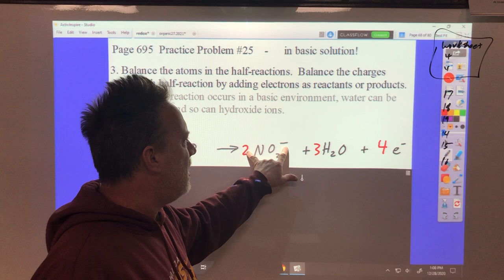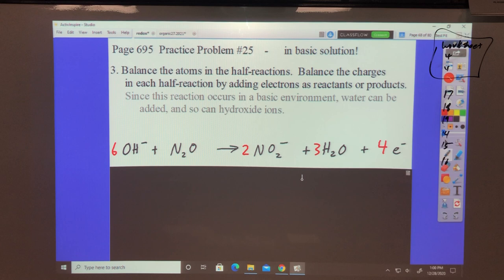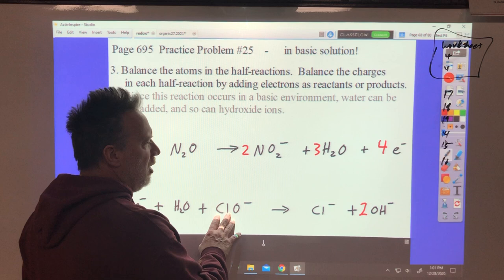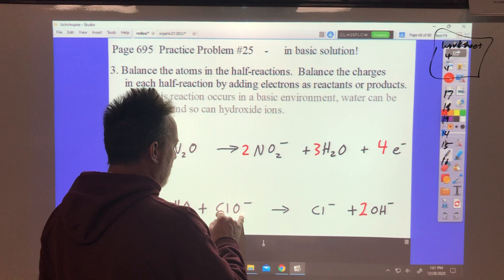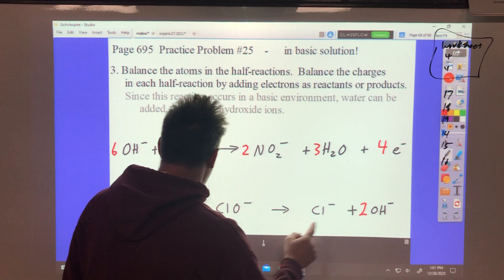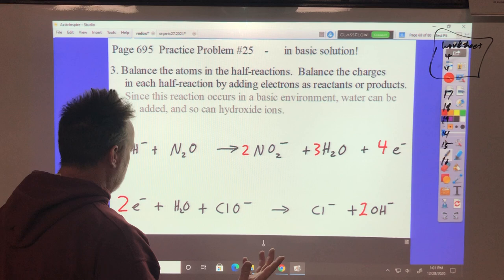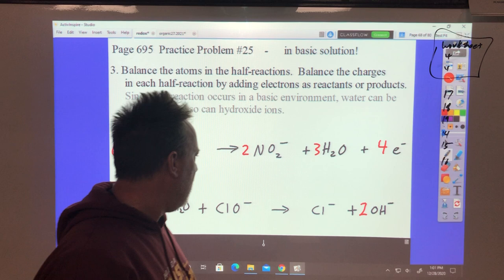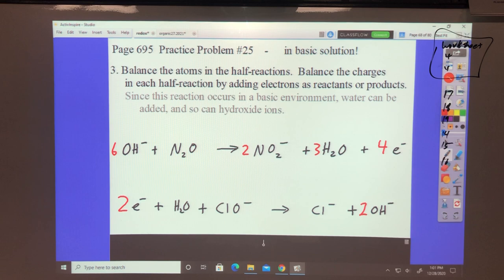Then I have 6 negatives here, 2 negatives here, so I have to have 4 extra electrons on this side. Over on the other side, I'm changing ClO minus to Cl minus. But I have to have OHs over here so that I can spread my oxygen out over here. I tried 2 first and that gave me 2 hydrogen and 2 oxygen. So that worked. And then my charges are 1, 2, 3 negatives and a negative. So I have to have 2 negatives here. Now we're good.